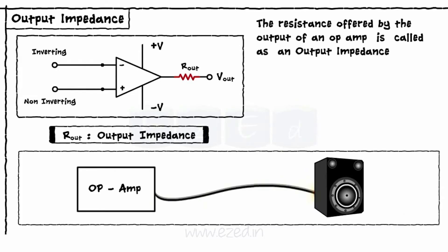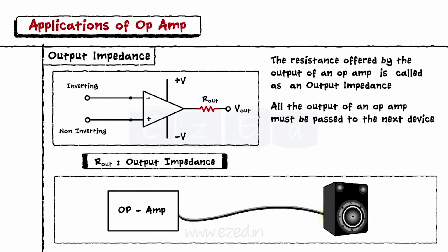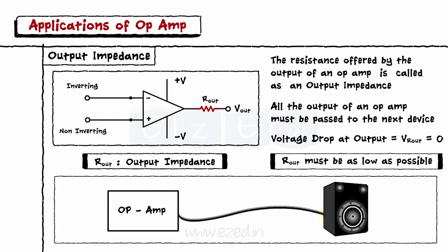It is necessary that all the output of an Op Amp must be passed to the next device. In other words, the voltage drop at output must be zero. Hence, output impedance must be as low as possible.